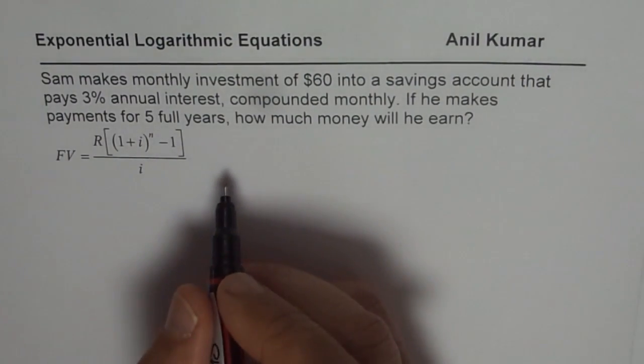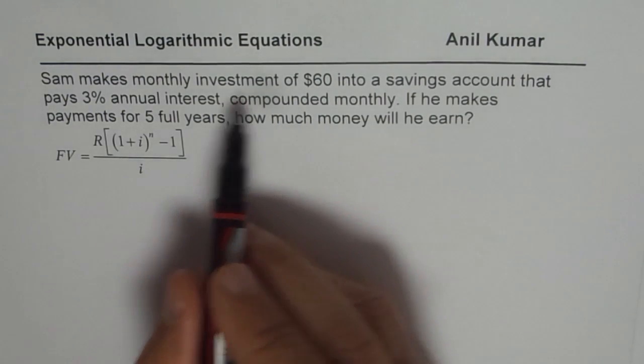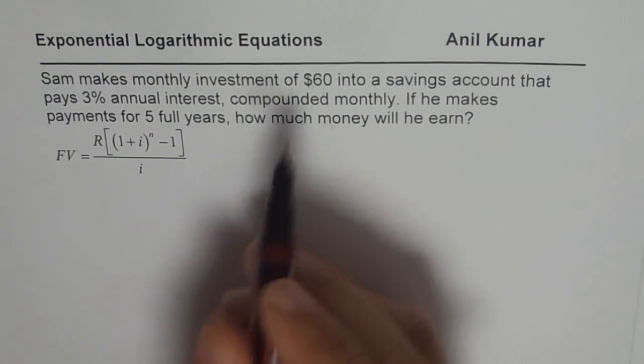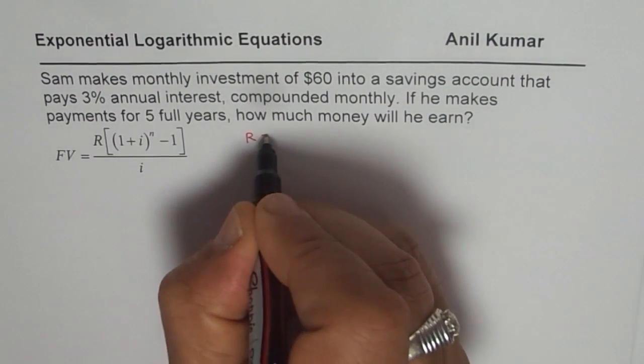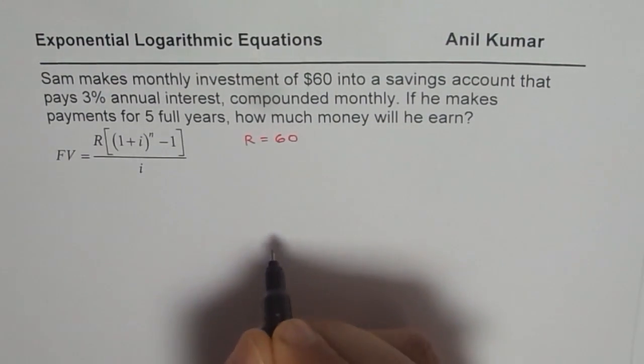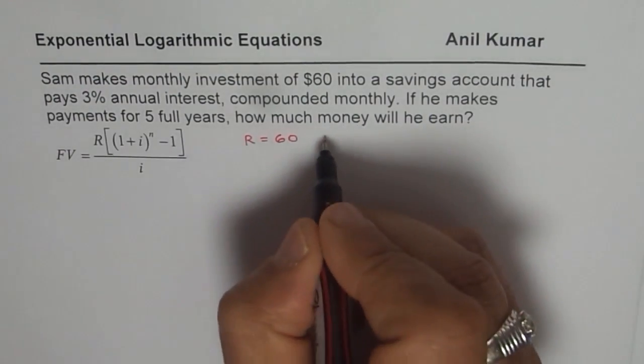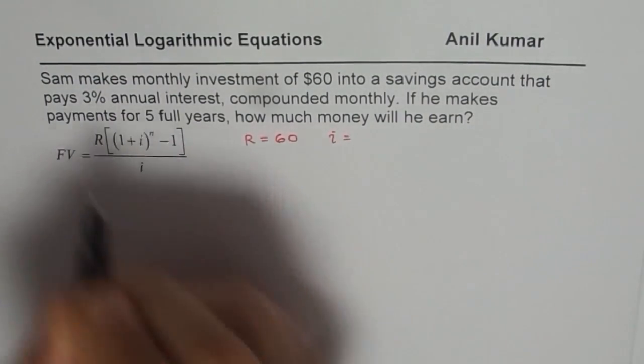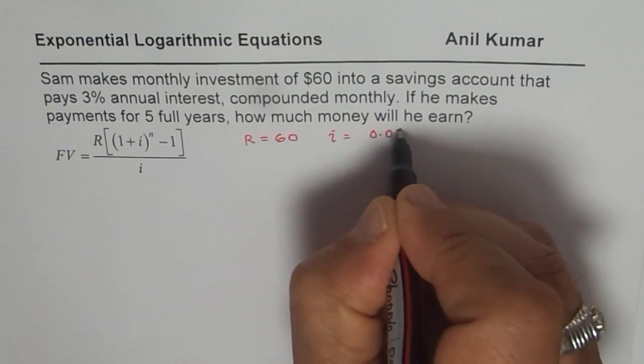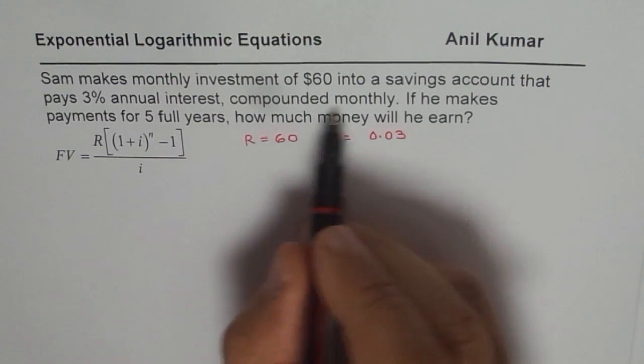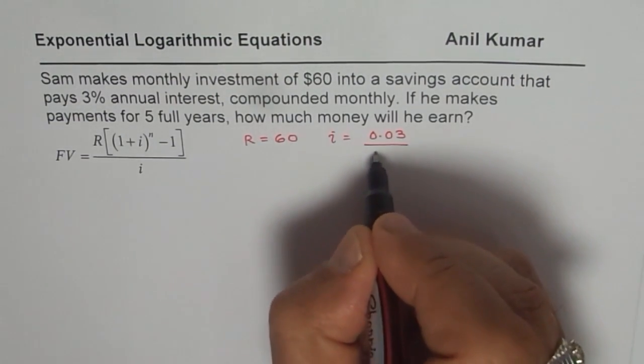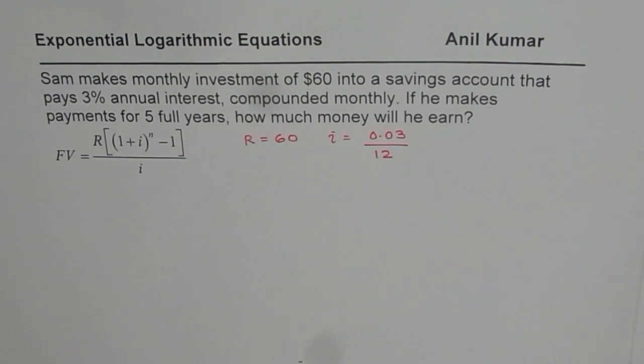Let us see what we are given and what we need to figure out. We are given monthly investment of $60, that means R equals 60 dollars. Interest rate i is 3%, that means 0.03, but it is compounded monthly, so we have to divide this by 12.